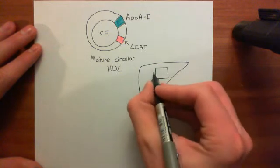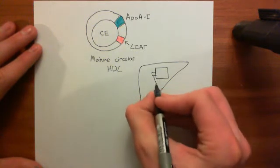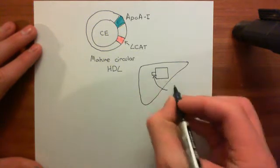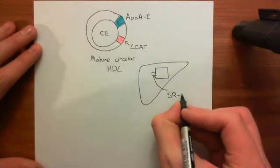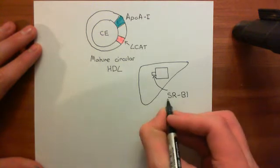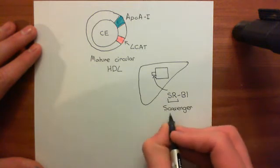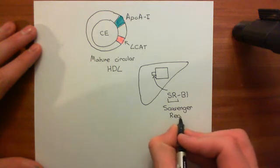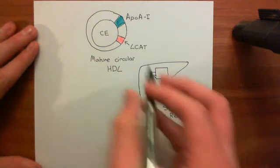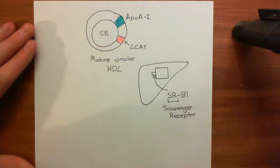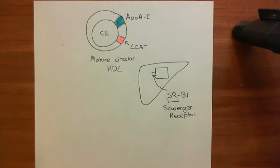The hepatocyte has a receptor for HDL molecules known as the scavenger receptor B1, or SR-B1. This binds to the HDL molecules, and the cholesterol collected within the HDL molecules goes into the hepatocytes, which will then either store it within cholesterol droplets or use it to synthesize bile acids. Basically, HDL is just mopping up excess cholesterol and returning it to the liver.